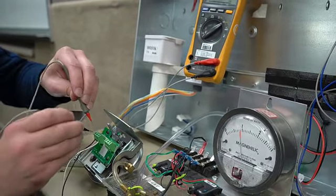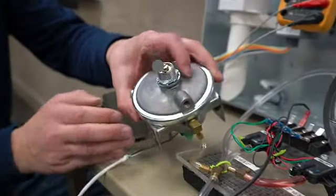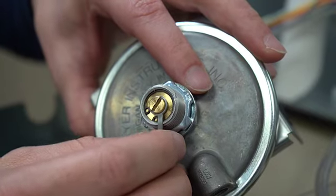If you need to make an adjustment to either increase it or decrease it, you can go back here and turn this screw either clockwise or counterclockwise to increase or decrease the pressure for the trip point.